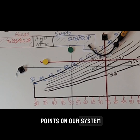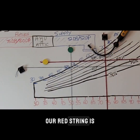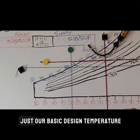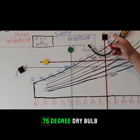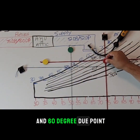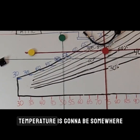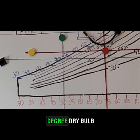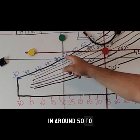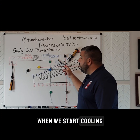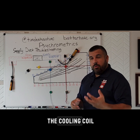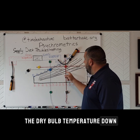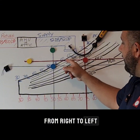We're going to plot two points on our system. Our red string is going to represent our return temperatures, and so we've got just our basic design temperature of 75 degree dry bulb and a 60 degree dew point, and then our supply air temperature is going to be somewhere around 50 to 55 degree dry bulb and around 50 to 55 degree dew points. When we start cooling the air down in the cooling coil, we immediately start bringing the dry bulb temperature down, so we are going from right to left here in our chart.